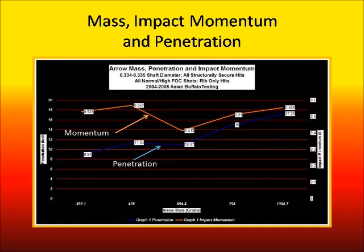Unfortunately, this bottom line doesn't show up well — it goes right along and you can see the numbers for it. This top line is the arrow momentum. Across the horizontal axis we have arrow weight. At this end we have very light arrows — these are all shot from one single compound bow. In this middle area, there's a transition where some of the arrows are from the compound and some are from the longbow. From here over, these were all shot with one single longbow.